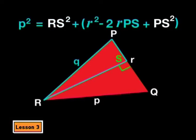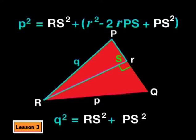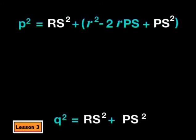In triangle PSR, choose the hypotenuse. So, PS squared plus RS squared equals Q squared. If you replace RS squared plus PS squared with Q squared in our equation, we get P squared equals Q squared plus R squared minus 2R times PS.